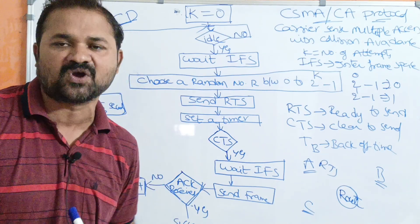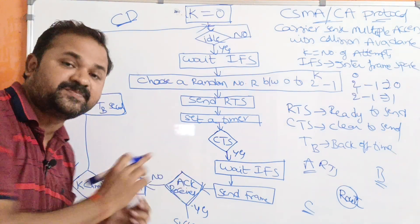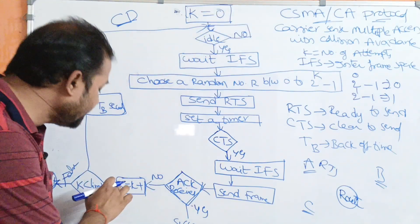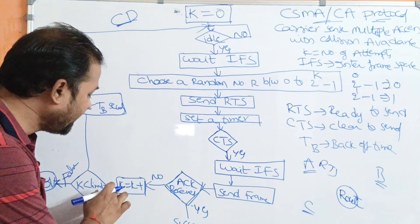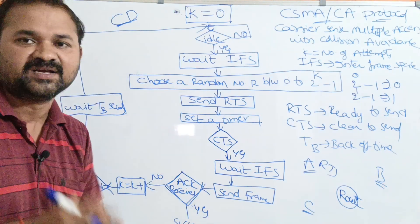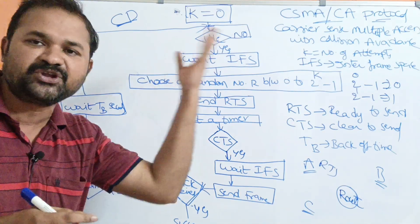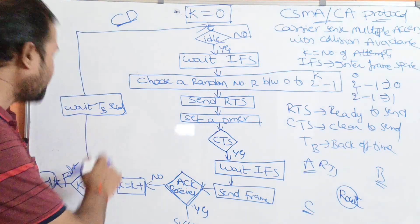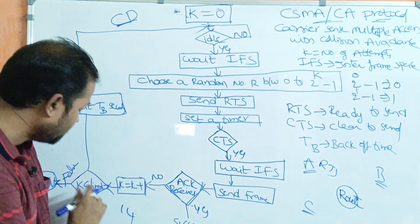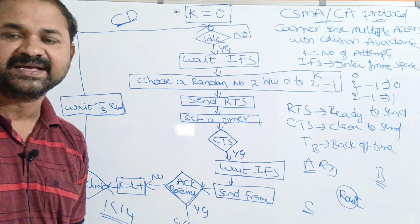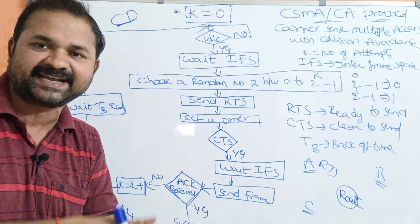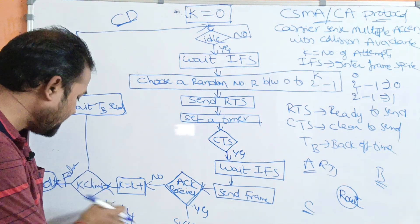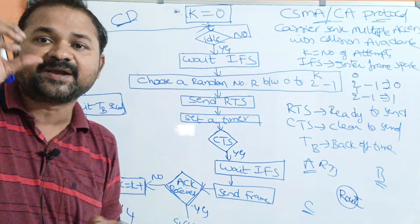If acknowledgement is not received, there may be a possibility that the frame was lost. In that case, the station makes a second attempt by incrementing K: K = K + 1. We then check whether K is less than the limit — here the maximum number of attempts is 14. If K is less than 14, the condition is true and we proceed to the next attempt.